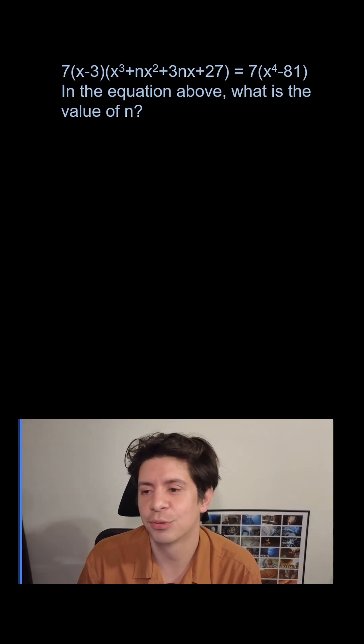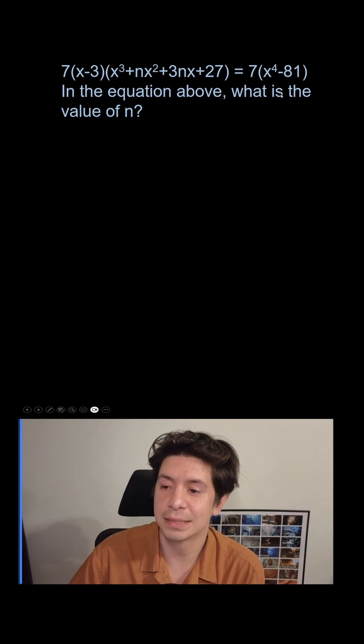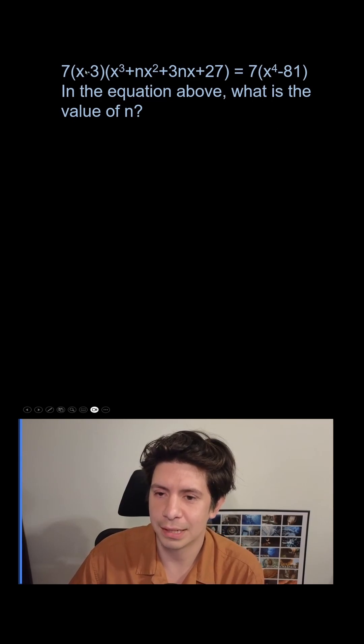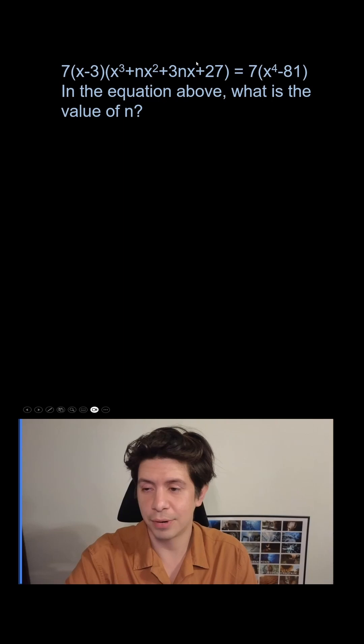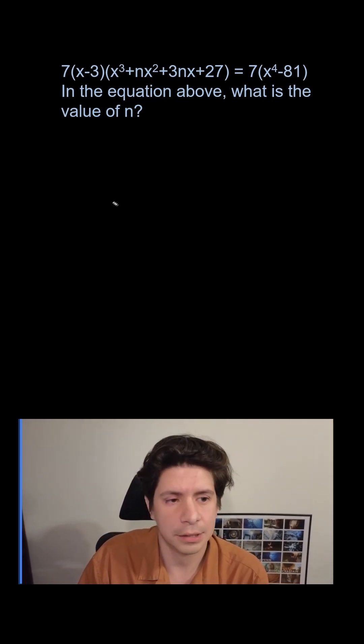There are multiple ways to do this. The way I'm going to do it is by trying to get the right side to look like the left side. You could also get the left side to look like the right side, but because I know the right side is x⁴ - 81, and that's a difference of squares, I can do it like this.